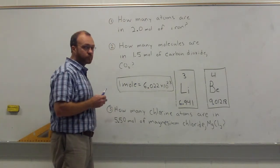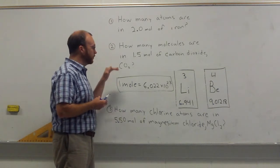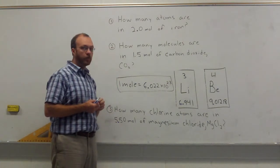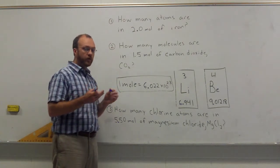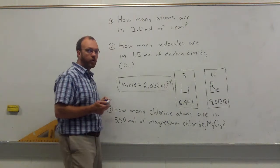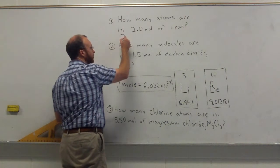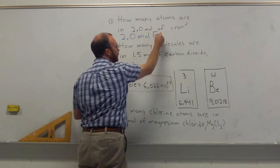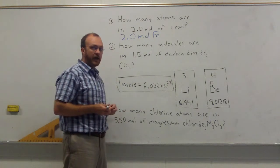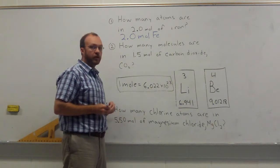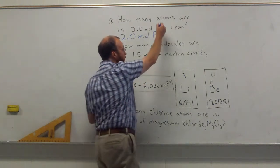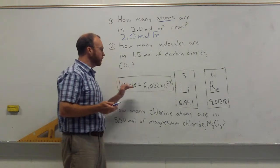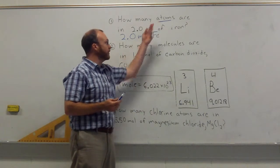Let's take a look at an example to see how that is used. The first question says: how many atoms are in two moles of iron? With our problems, we start with what is given to us — the number that we know. So here we have two moles of iron. The symbol for iron is Fe. Iron is just an element and it occurs as individual atoms, so our question is asking us about atoms of iron.